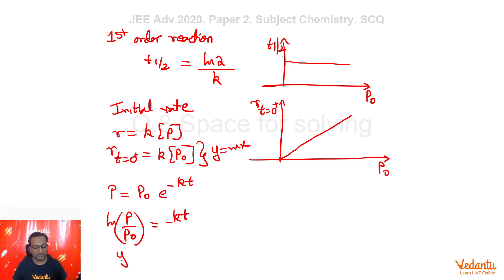That means Ln P by P naught is equal to minus KT. Now, as you can see, this is what expression, this is y equal to minus Mx type. So, if I plot Ln of P by P naught versus T, we'll get a negative sloping line in the fourth quadrant.